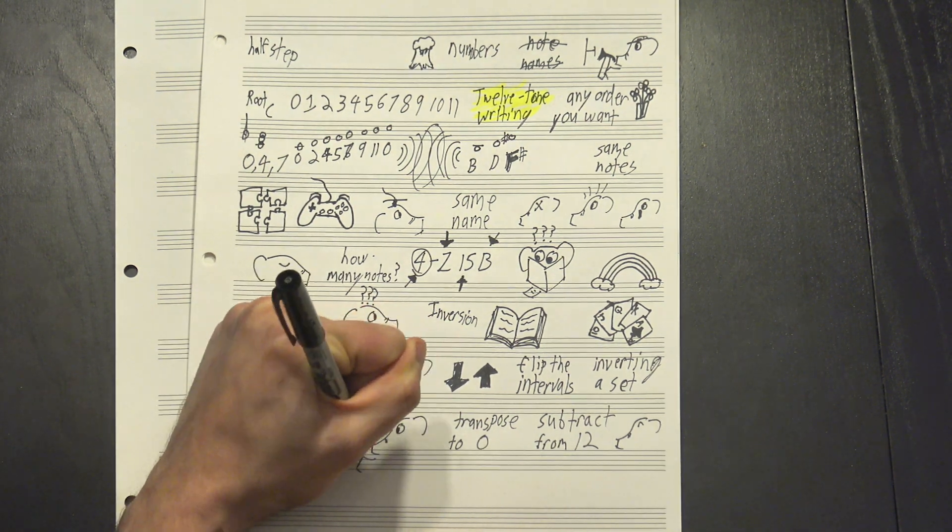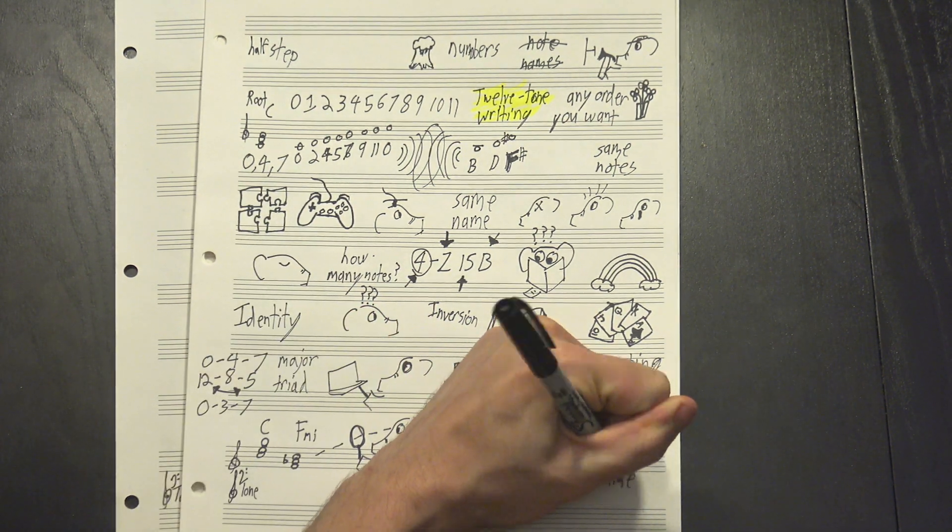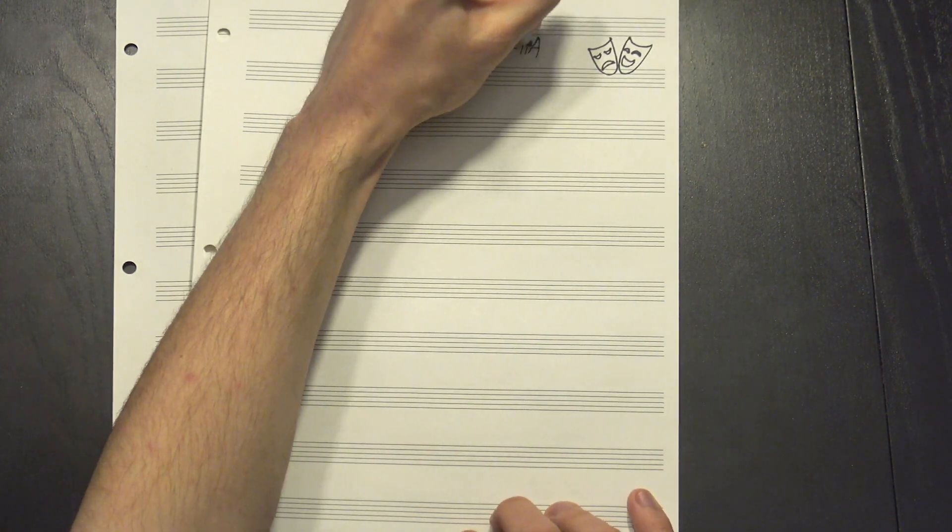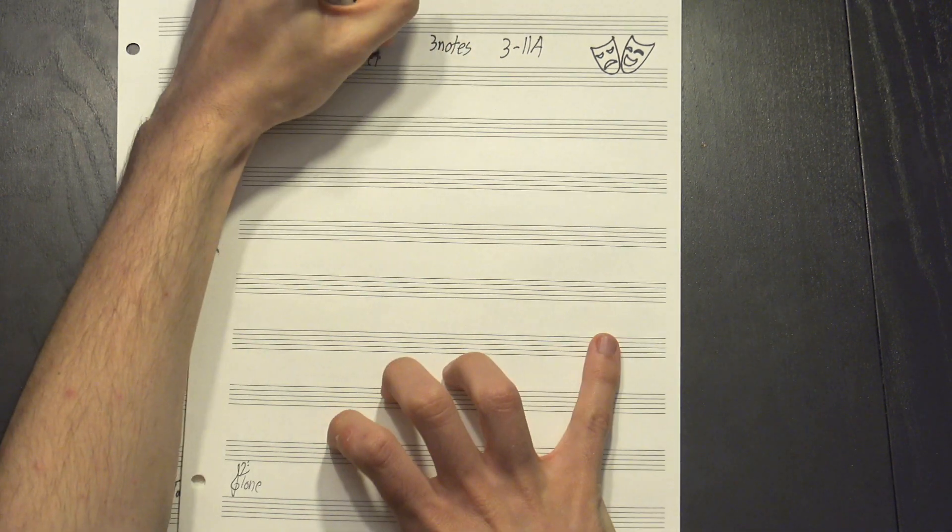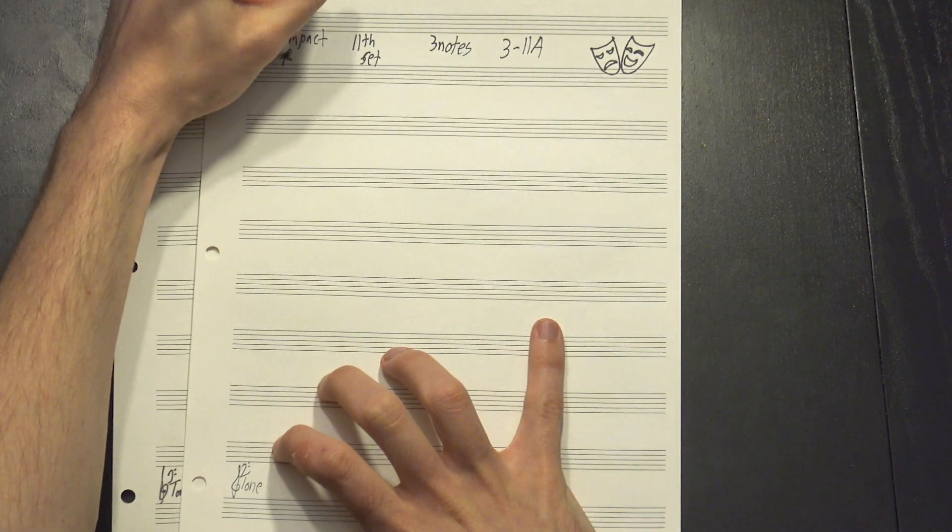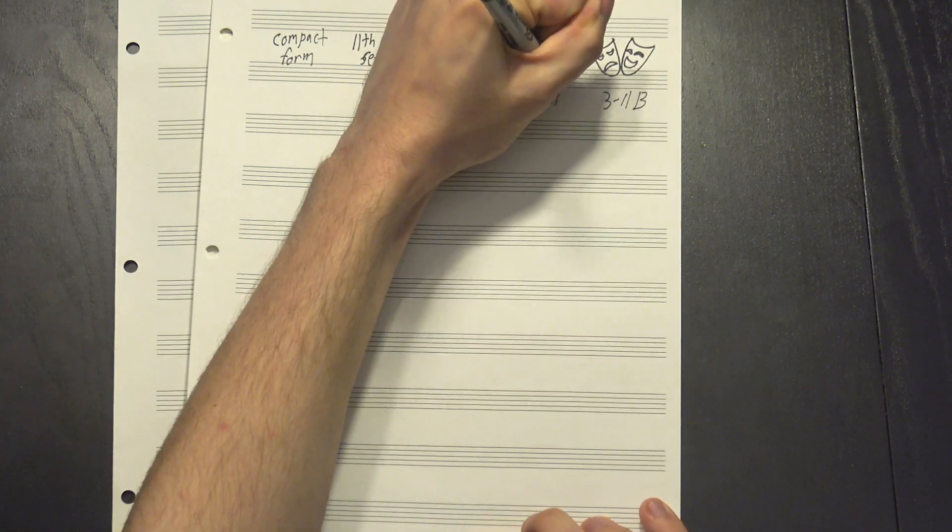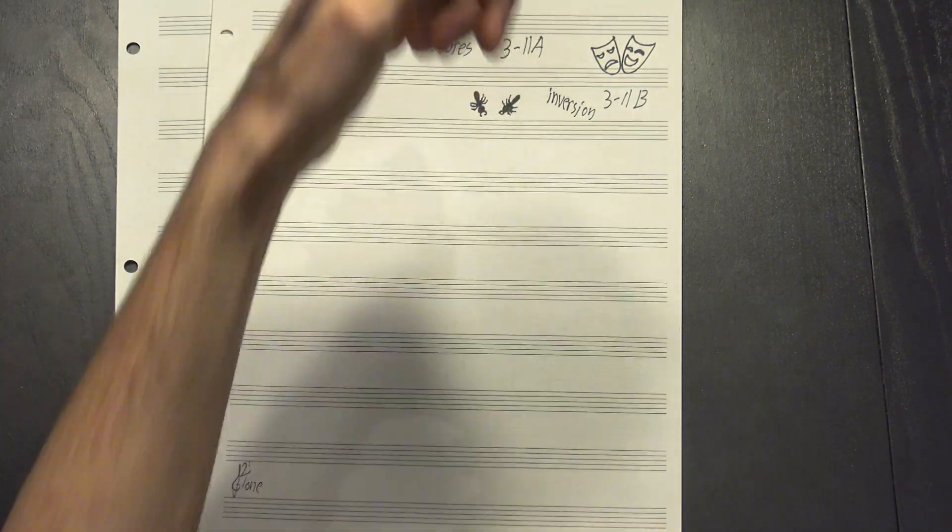So, in a way, we can look at both of these triads as the same basic set, just one of them's upside-down. To tell the difference, we call the minor triad 3-11a, meaning that it's got three notes, it's the eleventh set that does, and it's the more compact form of that set. The major triad, on the other hand, is 3-11b, which means it's the inversion of that same group of intervals.